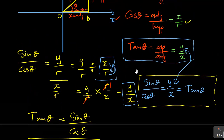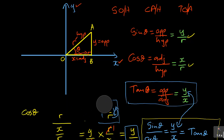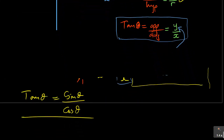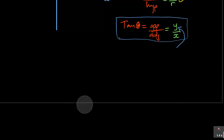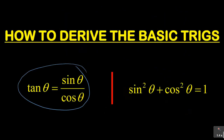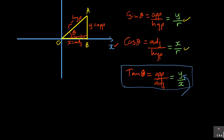That is the first derivation — the proof that tan θ equals sin θ over cos θ. Let me erase this part and take you to the second derivation. We want to derive that sin²θ plus cos²θ is equal to 1. Using the same triangle OAB, the key foundation here is the Pythagoras theorem, which says R² is equal to x² plus y².